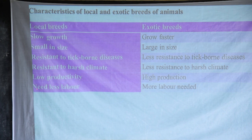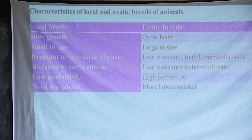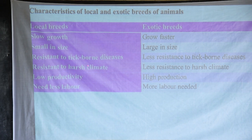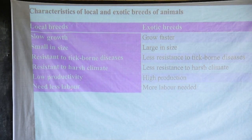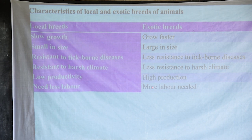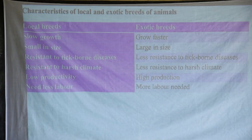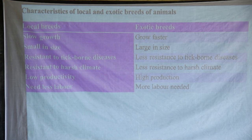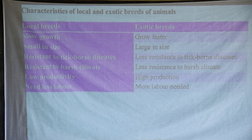Local breeds need less labor — one can use a free-range system where cattle graze on their own, with just one herdsman. This is an advantage of local breeds. Local breeds also have the advantages of being resistant to harsh climate and needing less labor. For exotic breeds, the advantages are that they grow faster, are large in size, and have high production.